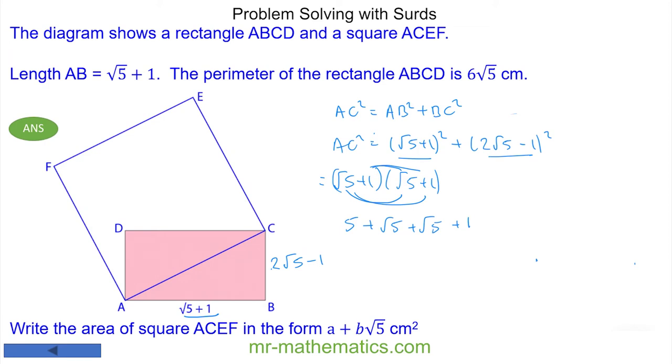I'll do the same to the other bracket where we have (2√5 - 1) multiplied by itself. So we have 2 times 2, which is 4, times √5 times √5, which is 5, so 4 times 5 is 20, minus 4√5, and negative 1 times negative 1 is positive 1.